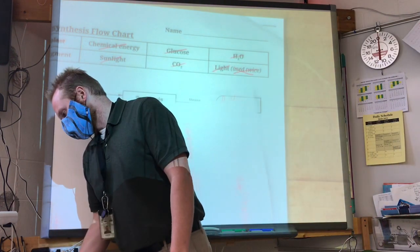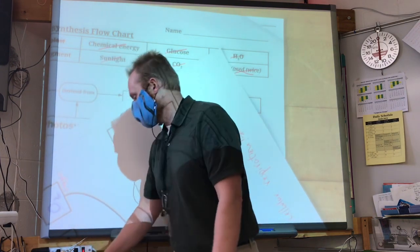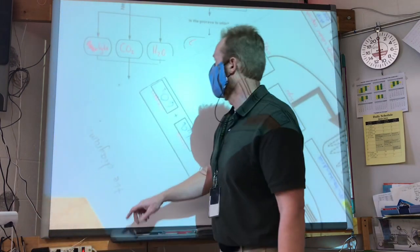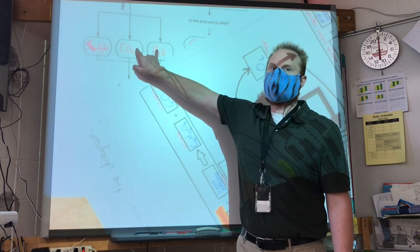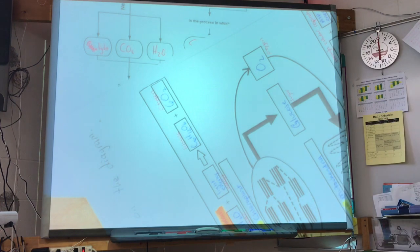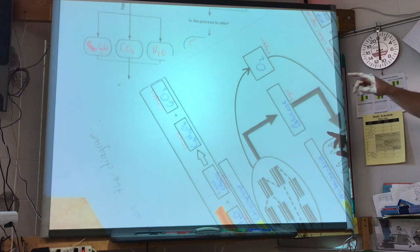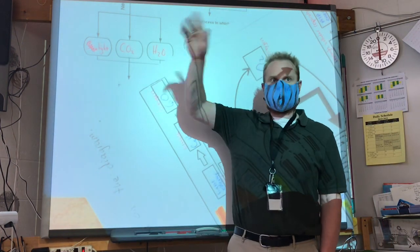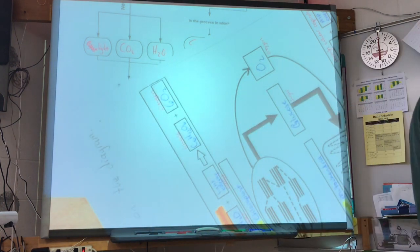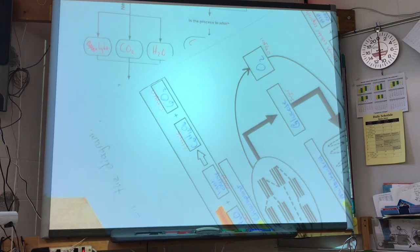What things does photosynthesis put together? There are three things it needs. It needs light, and it puts together carbon dioxide and water. The order of those three doesn't matter — it's just a list. It takes light energy and puts it together with carbon dioxide and water molecules.